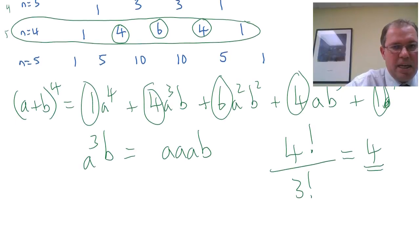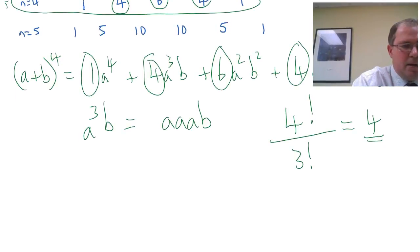Let's see if it works for the coefficient 6, a squared b squared. So now I've got a squared b squared, which is, of course, a, a, b, b.